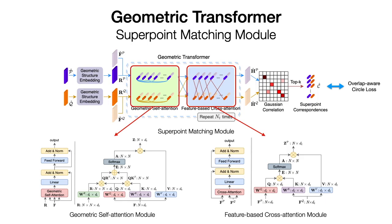Next, a geometric self-attention module is designed to learn the intra-point cloud geometric structure, where the geometric structure embedding is injected into the attention computation. And a feature-based cross-attention module is used to learn the inter-point cloud geometric consistency.